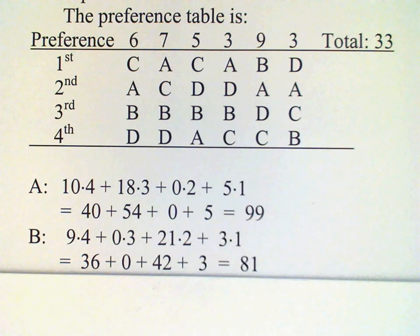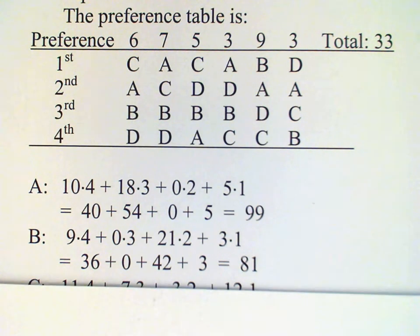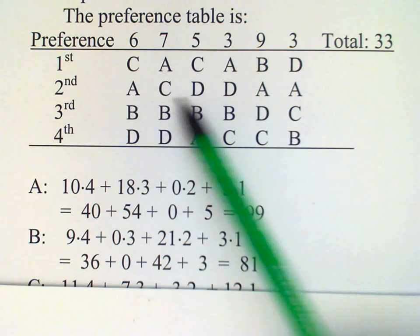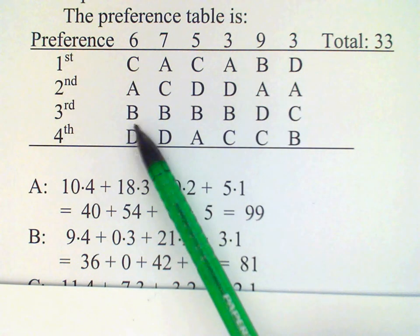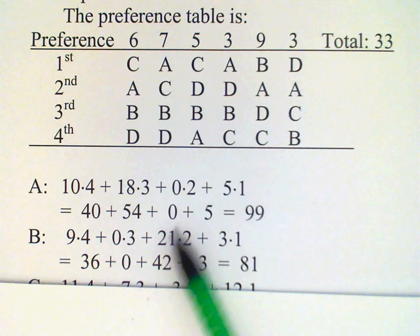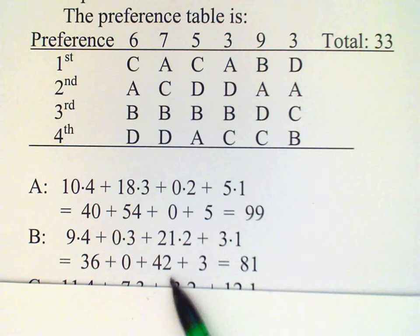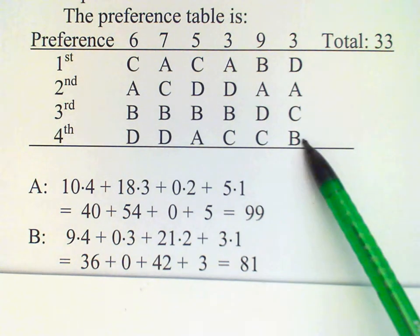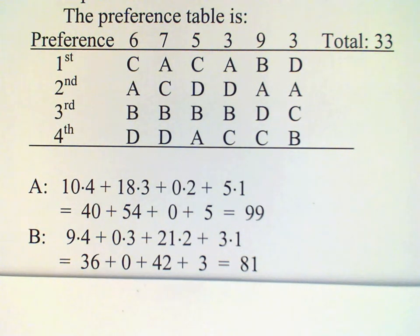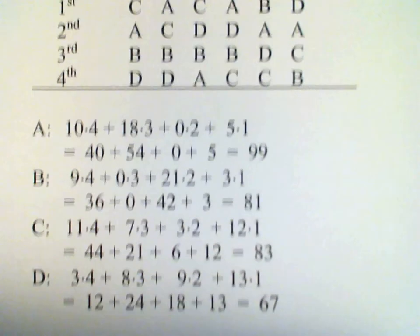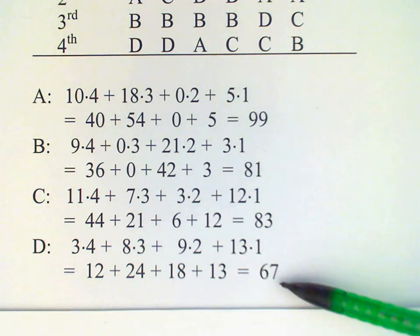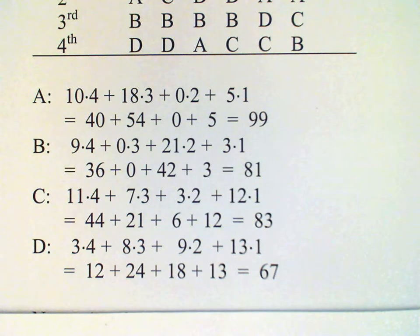Let's do the same thing for B. In the top row there are nine first-preference votes for B — multiply by four to get thirty-six. B has no second-preference votes. In the third row we have six plus seven is thirteen, eighteen, twenty-one third-preference votes, multiplied by two gives forty-two. There are three fourth-preference votes for B, giving a total of eighty-one for B. Doing the same for C and D, we get totals of eighty-three and sixty-seven respectively. So A wins this election by Borda Count.